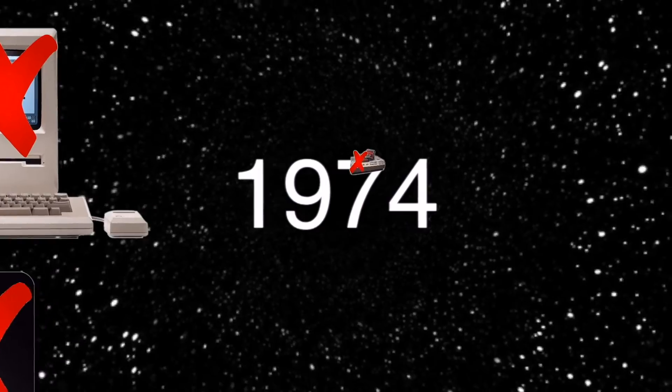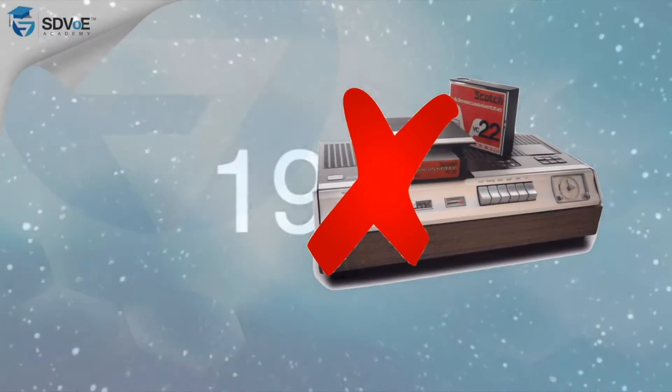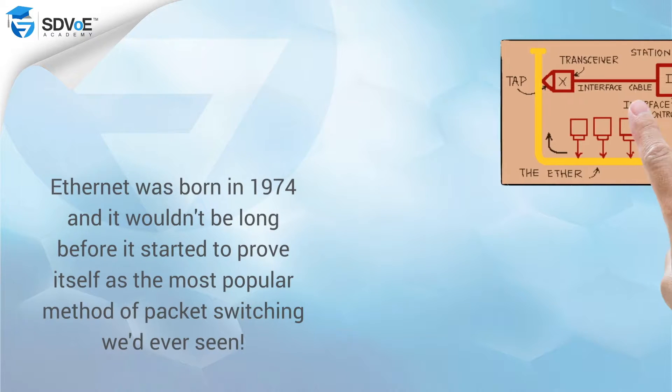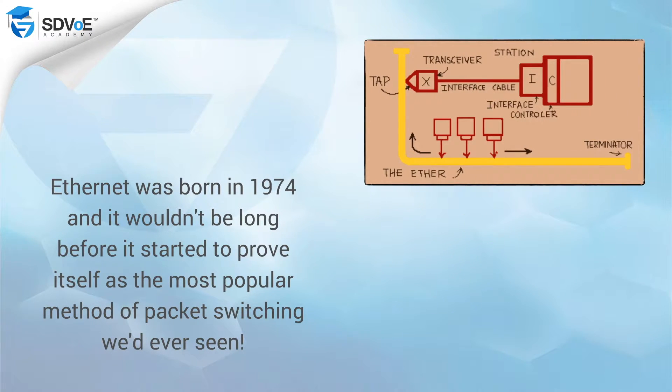We're going to begin this lesson with a trip back in time to the 1970s, when men wore flares and women had big hair. Richard Nixon was the President of the United States. There were no cell phones or personal computers and the VCR hadn't yet been invented. Ethernet, however, had been born and it wouldn't be long before it started to prove itself as the most popular method of packet switching we'd ever seen.